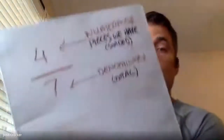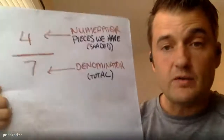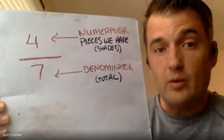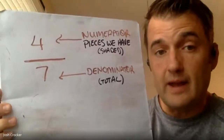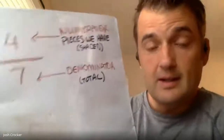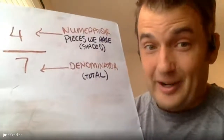So I'm drawing four-sevenths now. My numerator is four, which means that we have four pieces. My denominator is seven, which means that to make the whole, there were seven. I picked seven because seven is a hard number to draw.